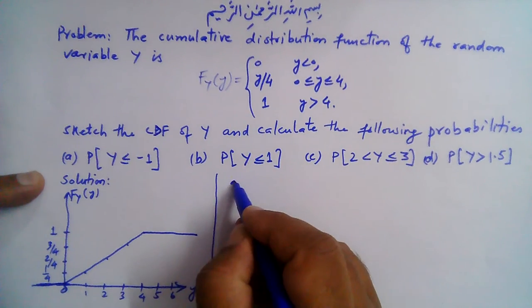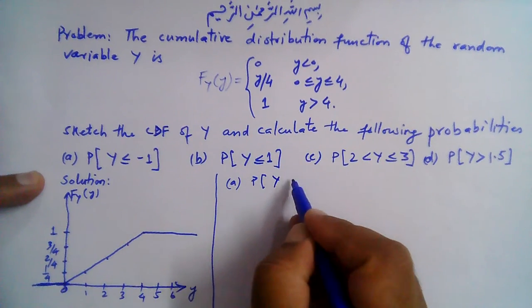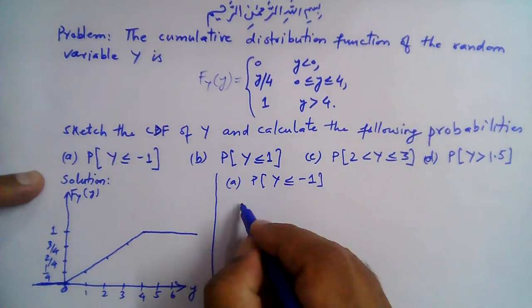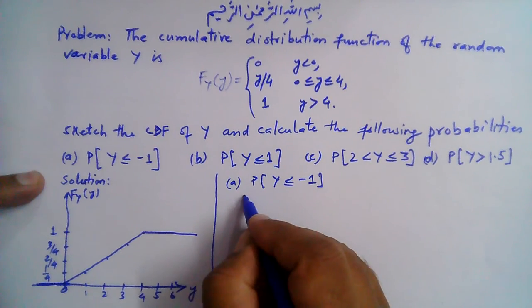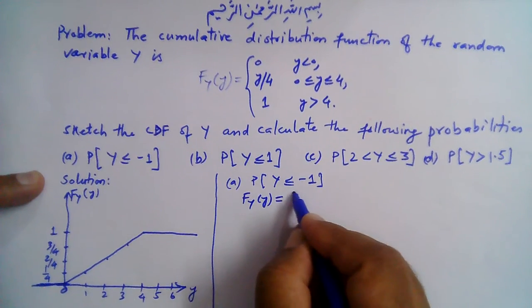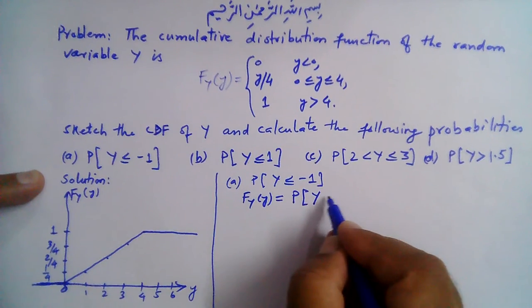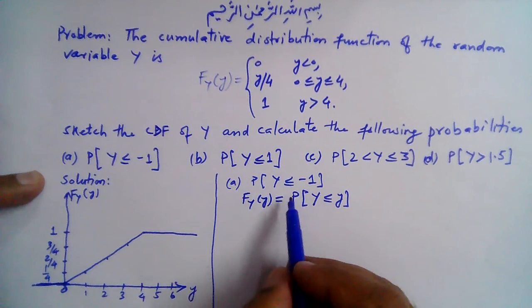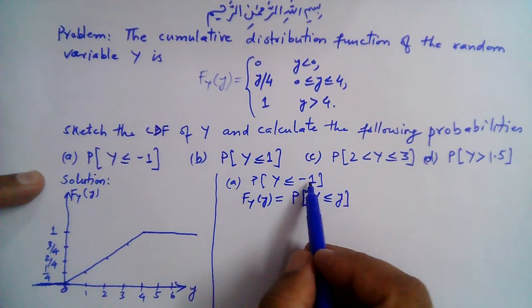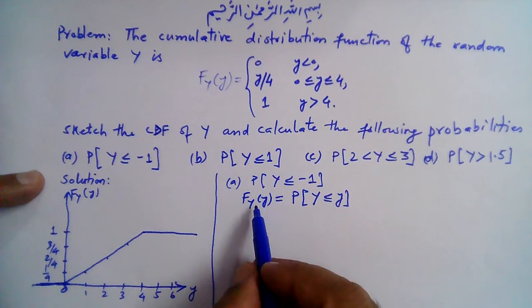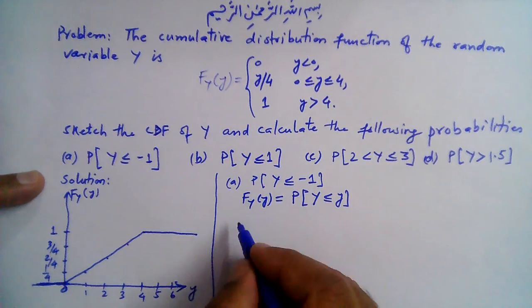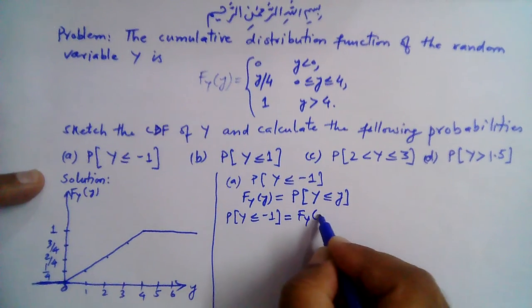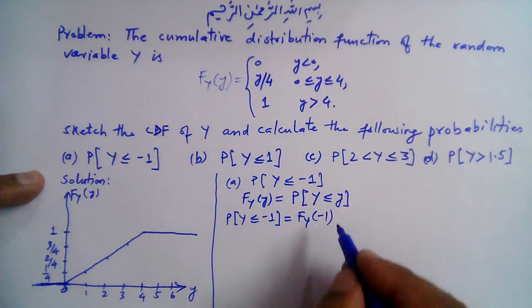Now part a: we need to find the probability that Y ≤ -1. According to the definition of the CDF, F_Y(y) = P(Y ≤ y), so the probability that Y ≤ -1 equals the value of the CDF at -1. We can write P(Y ≤ -1) = F_Y(-1), and at -1 we see that it is 0.